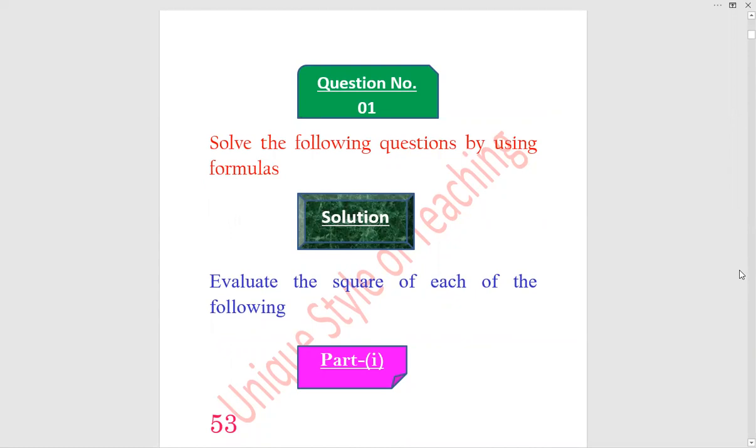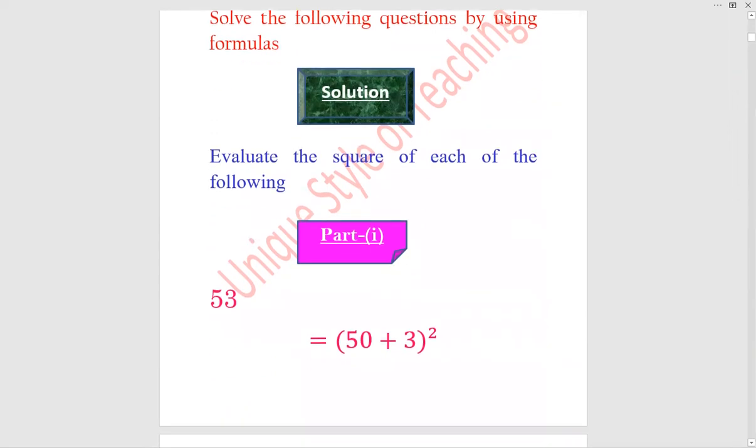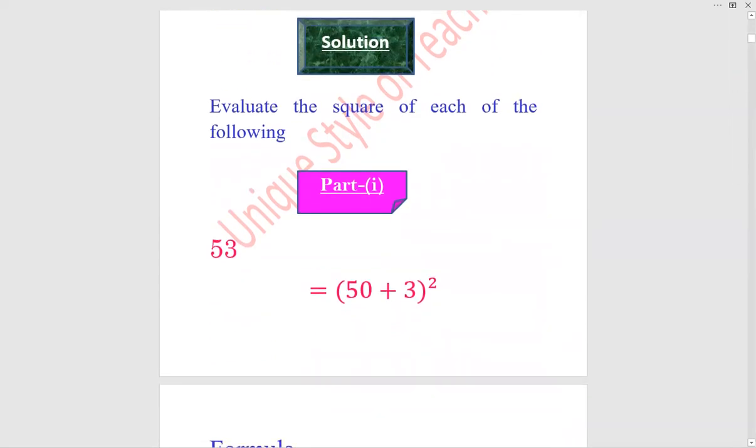Solve the following questions by using formulas and evaluate the square of each of the following. 53 you can find with the help of formula. 53 can be written as 50 plus 3 whole square.